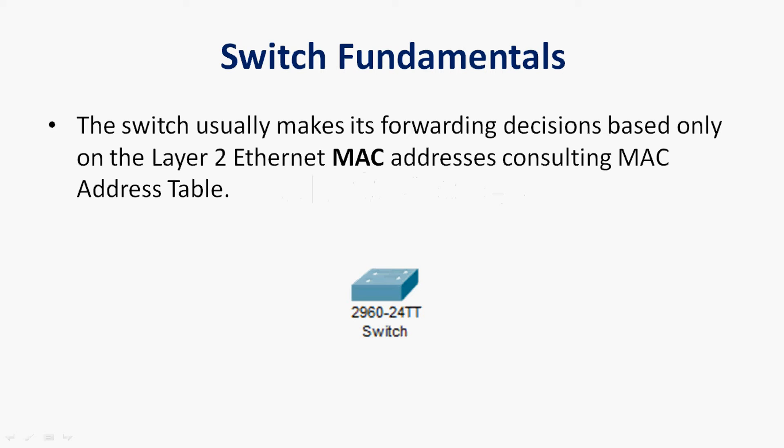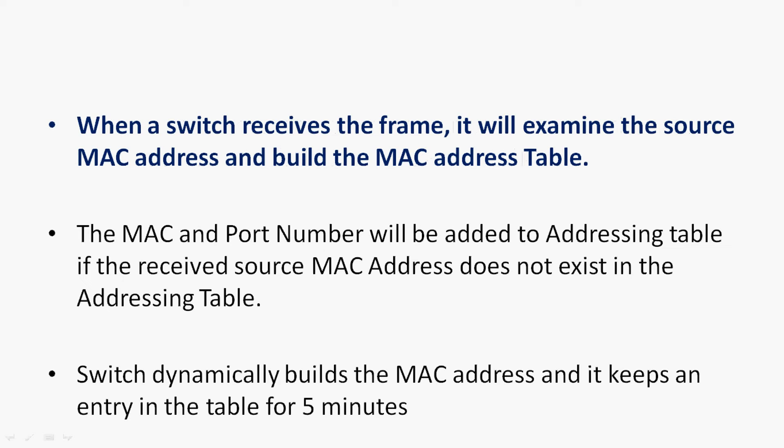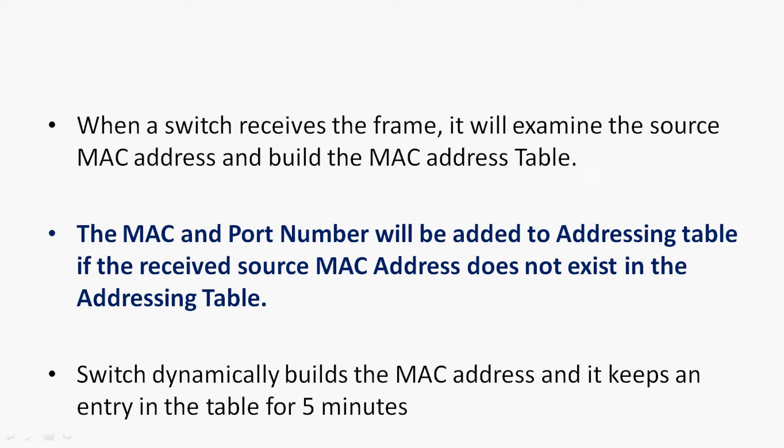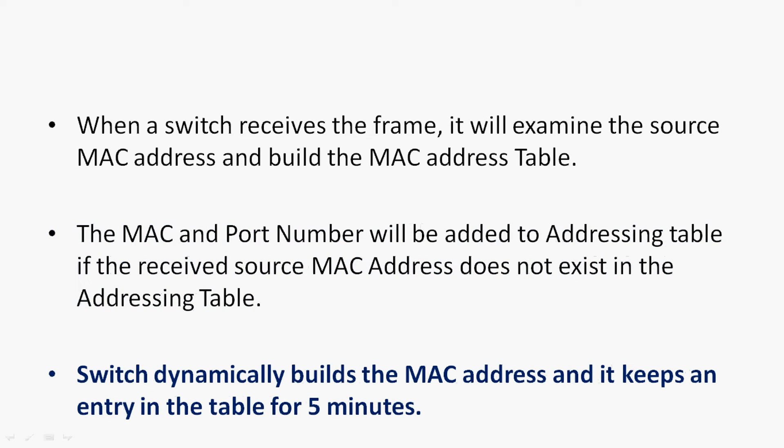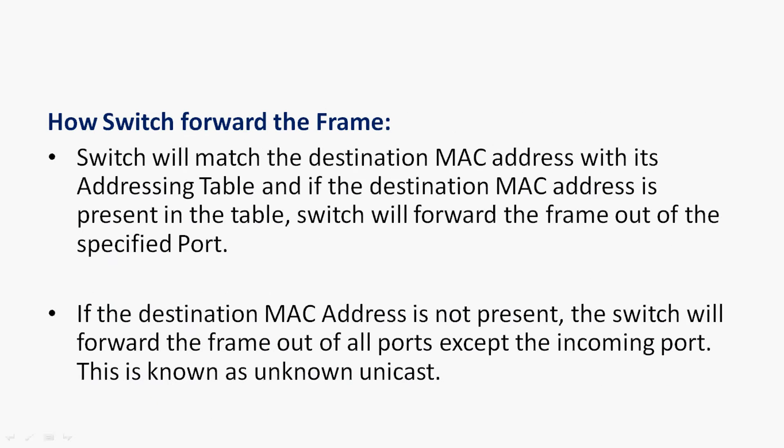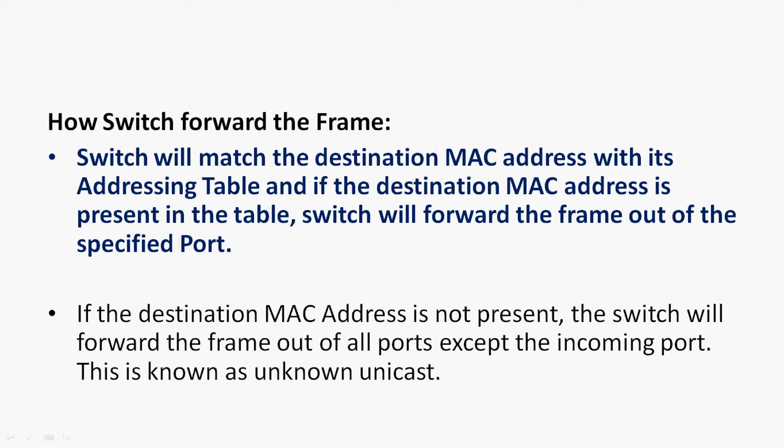Coming back to our concept, first of all we will see switch fundamentals. The switch usually makes its forwarding decisions based only on the Layer 2 Ethernet MAC address table. When a switch receives a frame, it will examine the source MAC address and build the MAC address table. The MAC and port number will be added to the addressing table. If the received source MAC address does not exist in the addressing table, the switch dynamically builds the entry and keeps it in the table for five minutes.